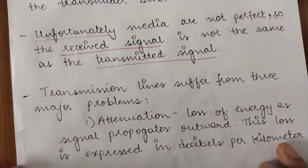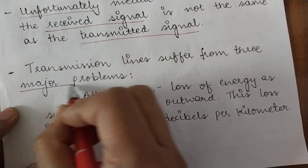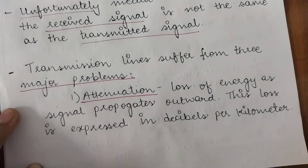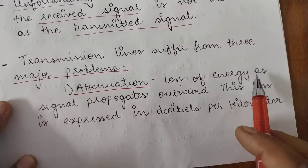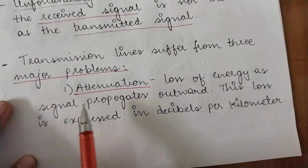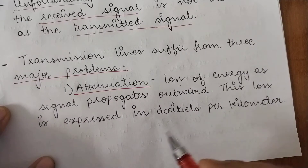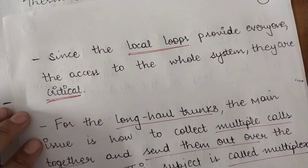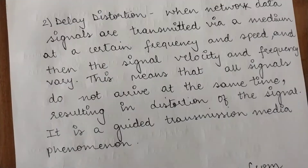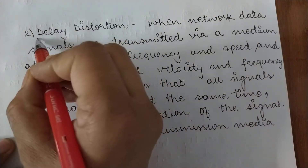Transmission lines in a telephone system suffer from some major problems. The first is attenuation — the loss of energy of the signal as it travels or propagates outward. This loss is expressed in decibels per kilometer. The next major problem, other than attenuation, is delay distortion.